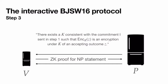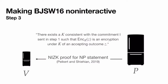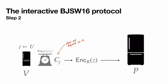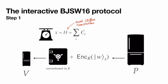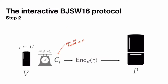To make the BJSW protocol non-interactive, the obvious first step is to replace the zero-knowledge proof at the end with a non-interactive zero-knowledge proof. But the real obstacle to compressing the three steps into one is that the prover's proof in step three depends on the verifier's challenge and measurement outcome from step two, which depend on the instance-dependent witness state. We can't have the prover do step two — that would violate soundness — and we also don't have enough messages for the verifier to do step two.